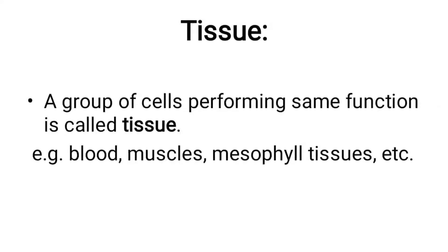A group of cells performing the same function forms tissues. Examples of tissues include blood, epithelial tissue, muscle tissue, and mesophyll tissue in plants. Tissues are larger than cells but are made up of cells.